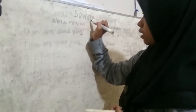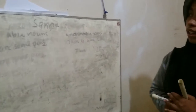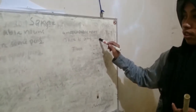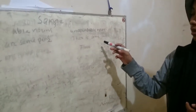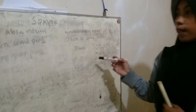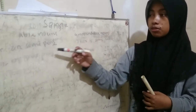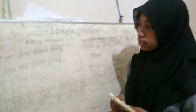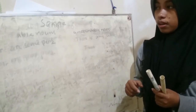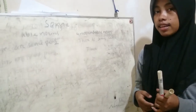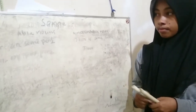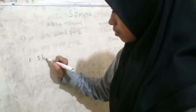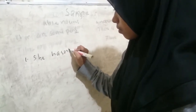Next, I will explain about 'any.' Like 'some,' 'any' also follows countable nouns and uncountable nouns. The rules of 'any': first, we use it in negative sentences, and second, in interrogative sentences.